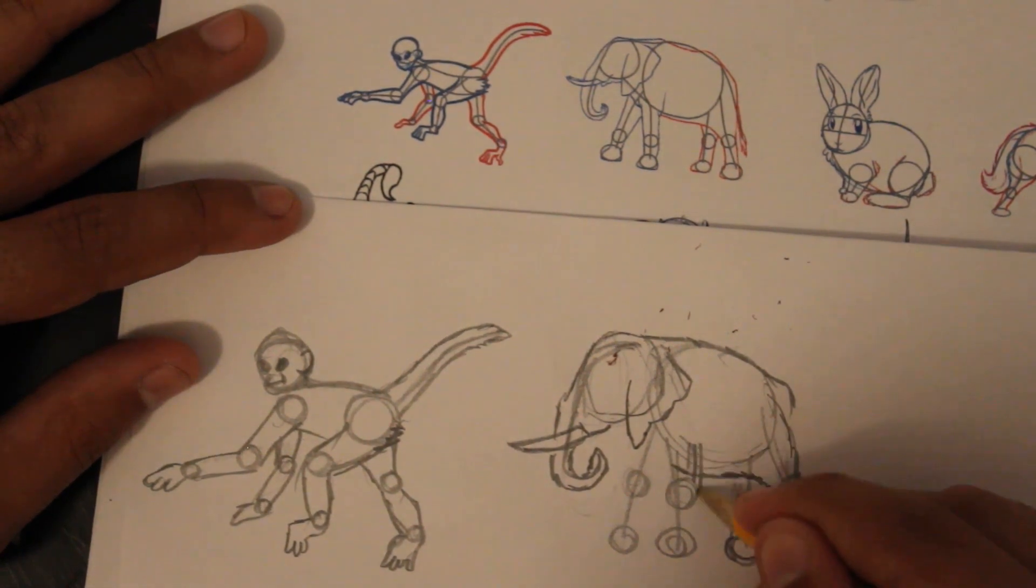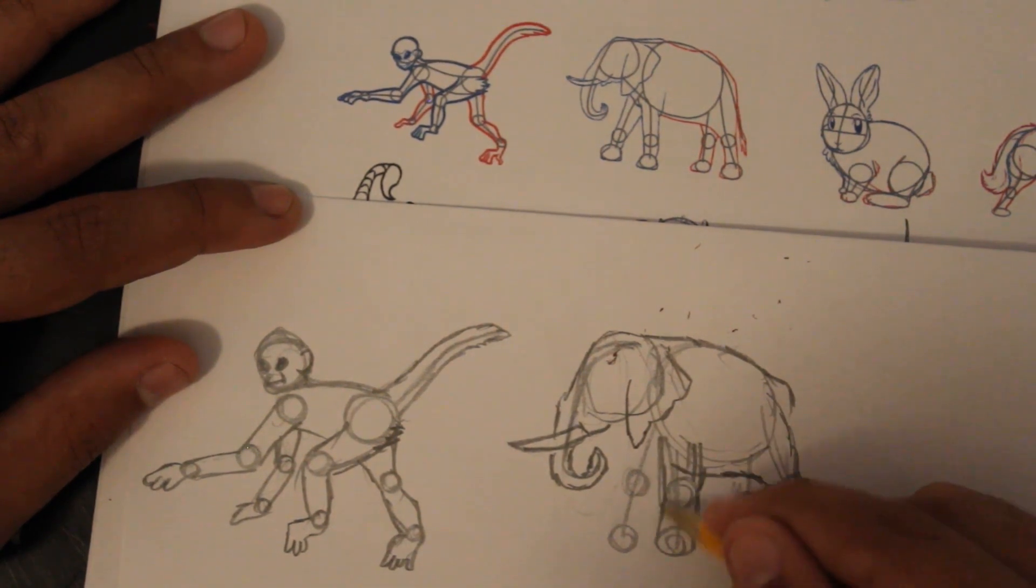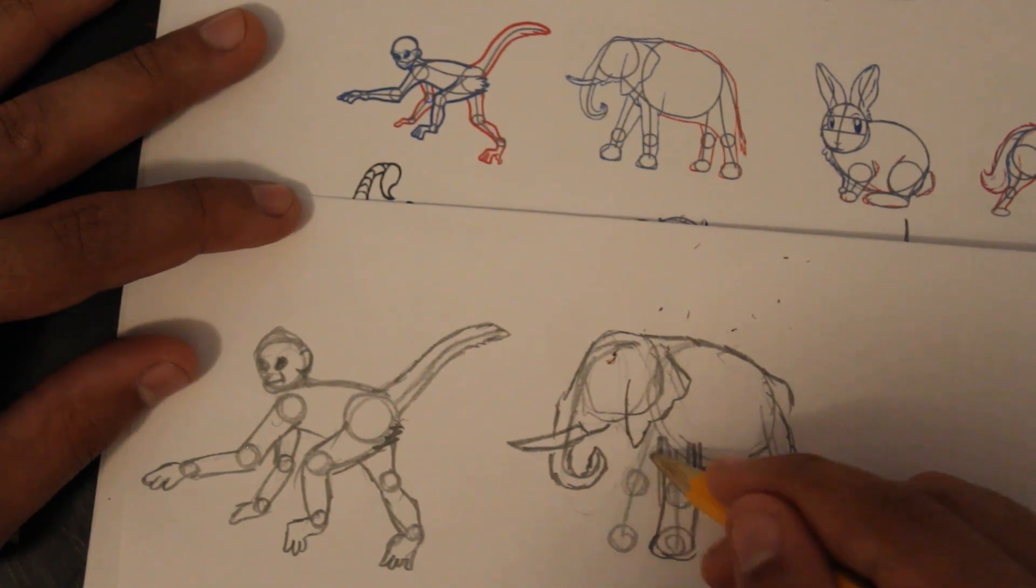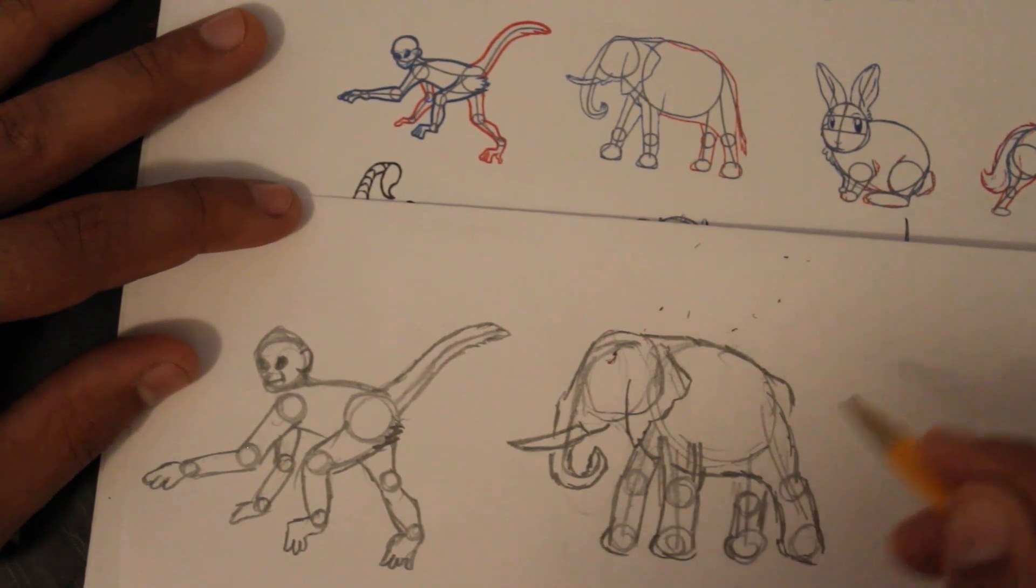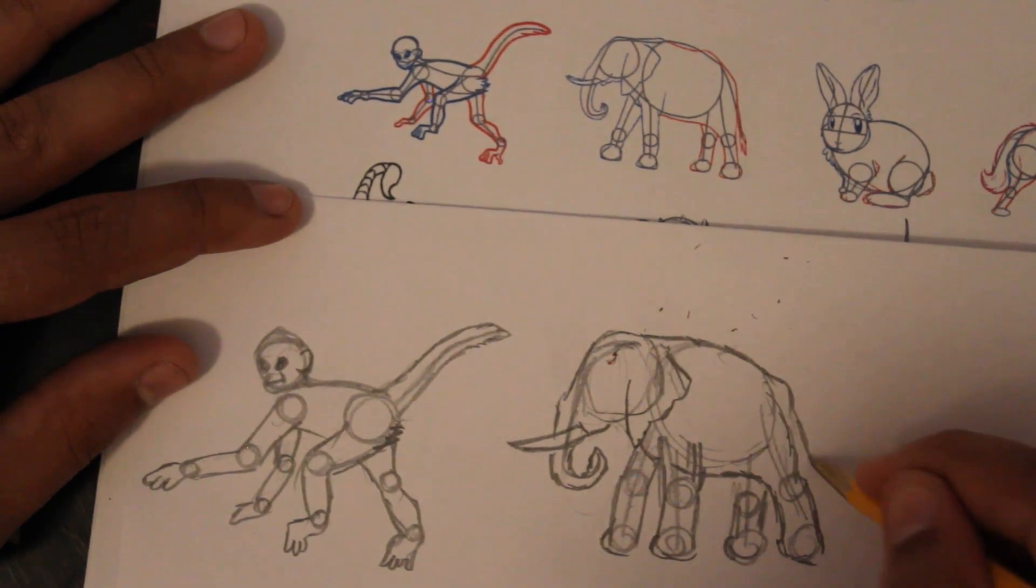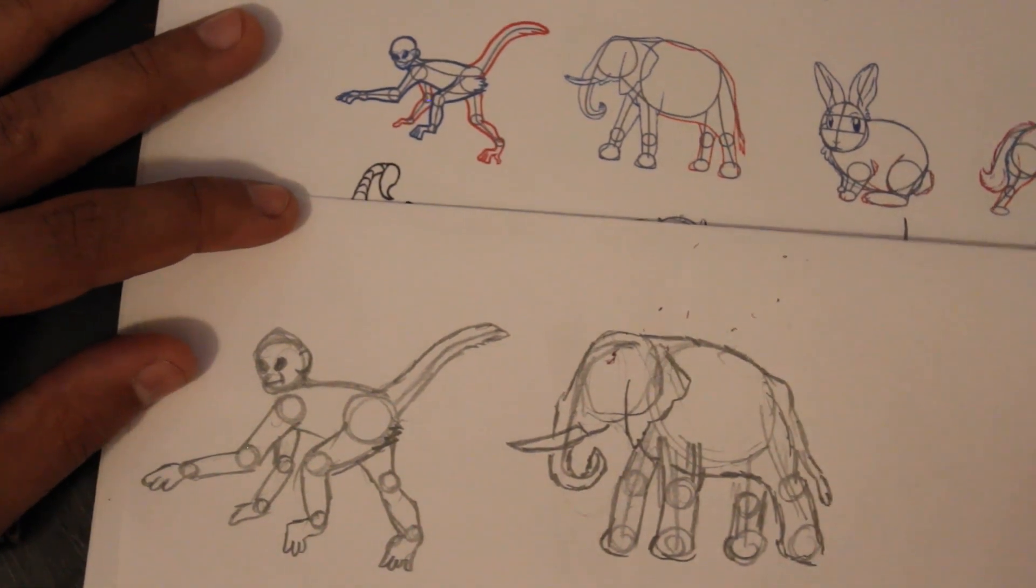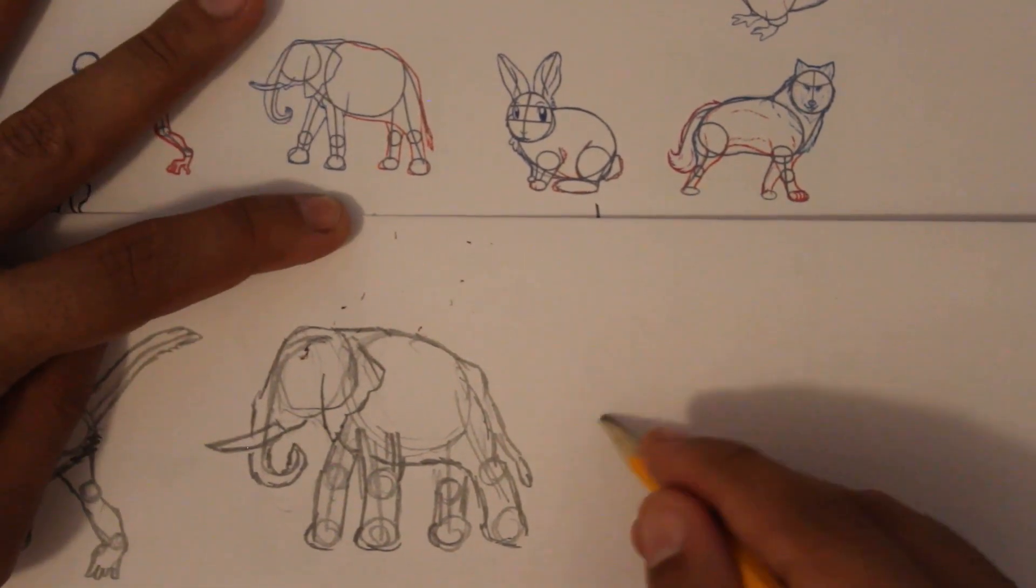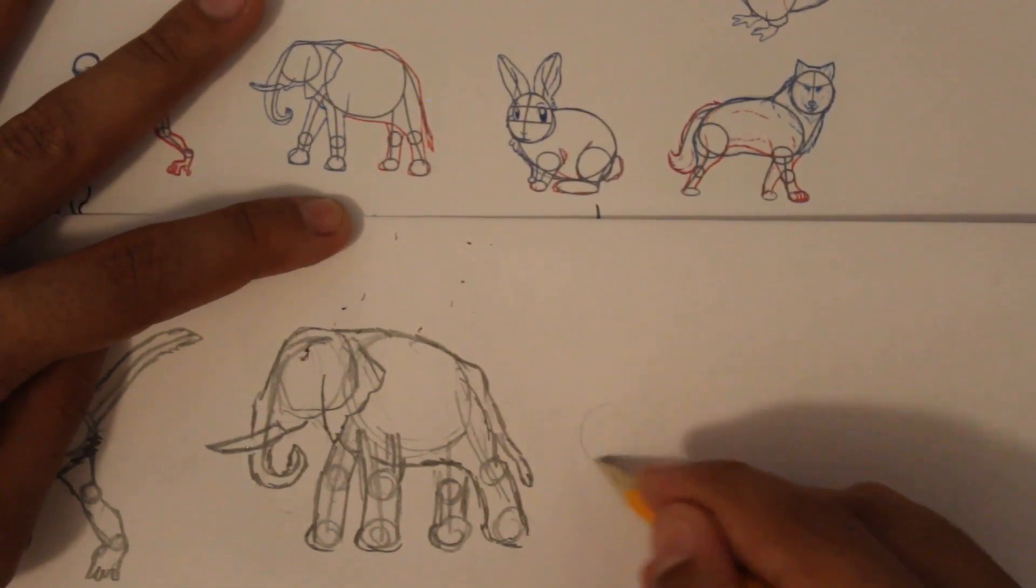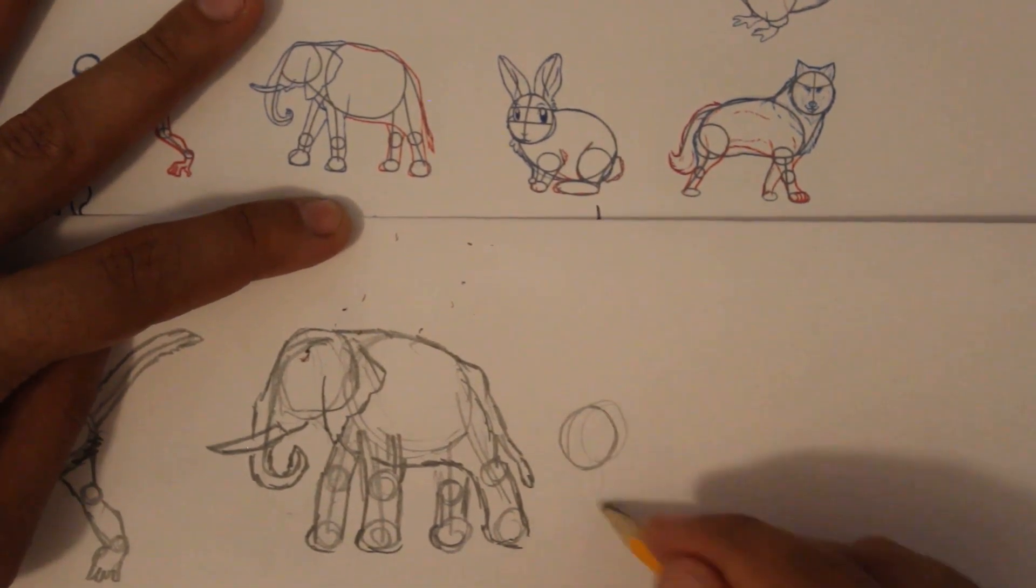Once you learn how to do this, then really anything becomes possible, especially if you're using references, which is exactly what we're going to do for the next assignment. And last but not least, we're going to add the tail. Alright, the elephant is done. Now we're going to move on to this little rabbit. Alright, we're going to add shapes first.